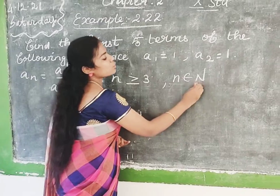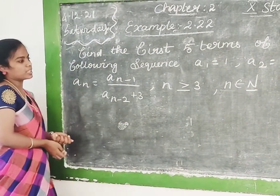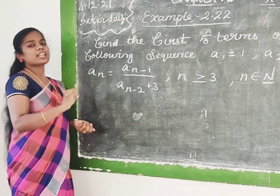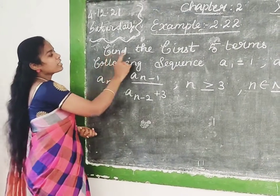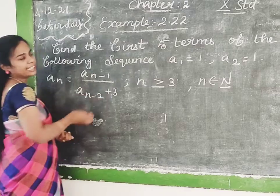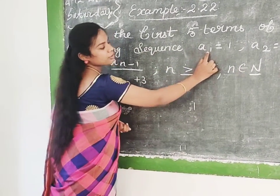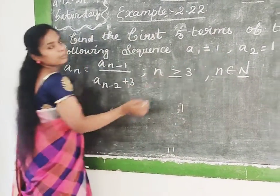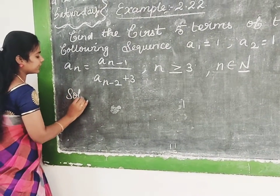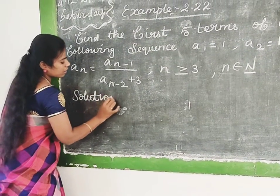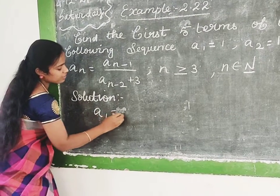These numbers come from natural numbers. N means natural numbers, starting from 1. We can calculate using one equation for the first five terms. The first term answer is 1, and the second term answer is 1. So, writing down the solution: A1 answer is 1, A2 answer is 1.